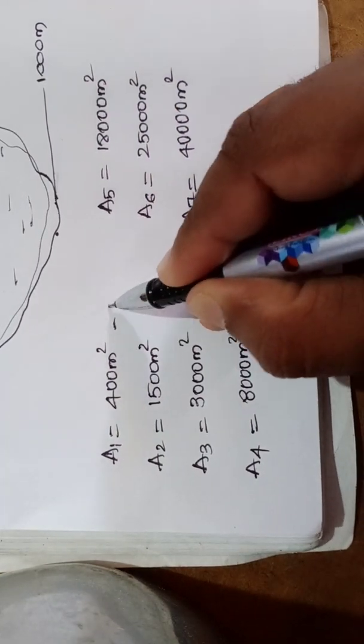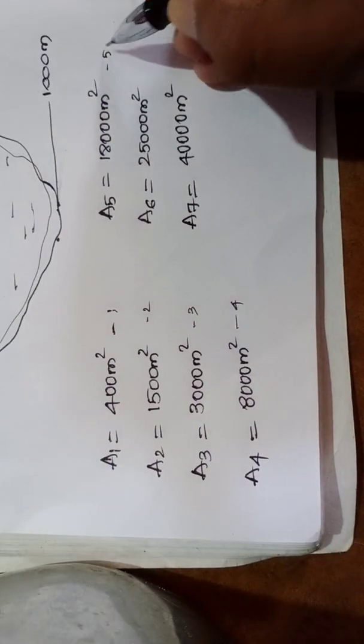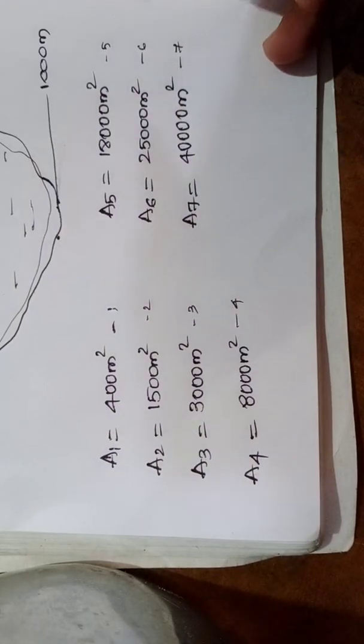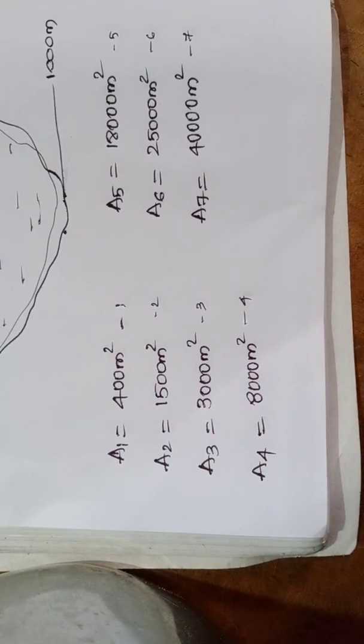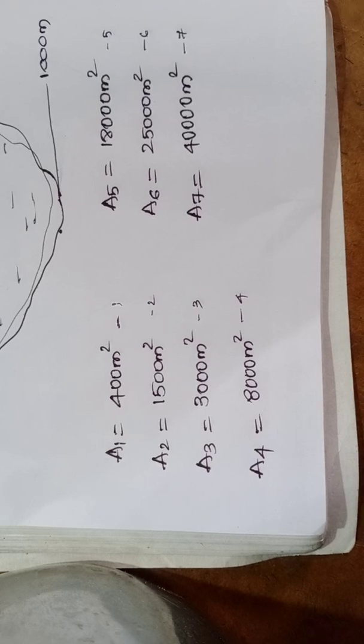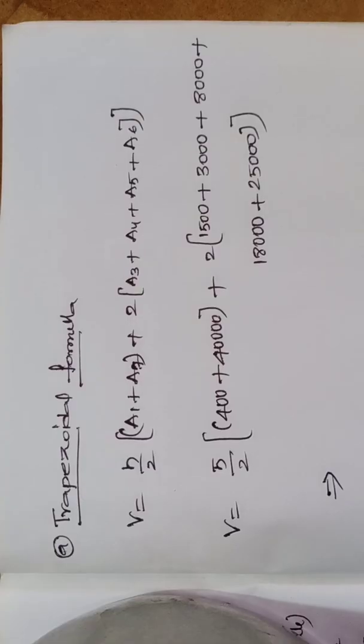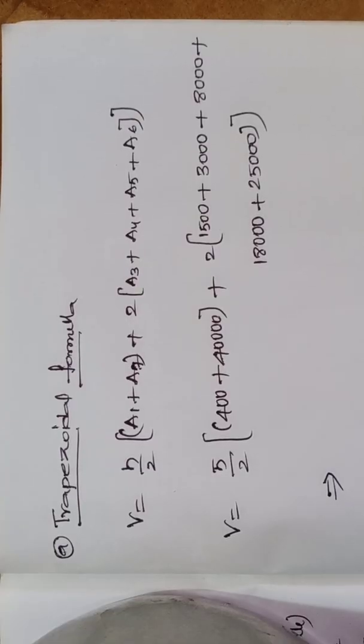I will give the numbering: one, two, three, four, five, six, seven. As earlier discussed while doing the formulas, trapezoidal has no limitation, whereas for prismoidal it can be used for odd number of areas. So I can use both formulas. Now I have substituted all the values.